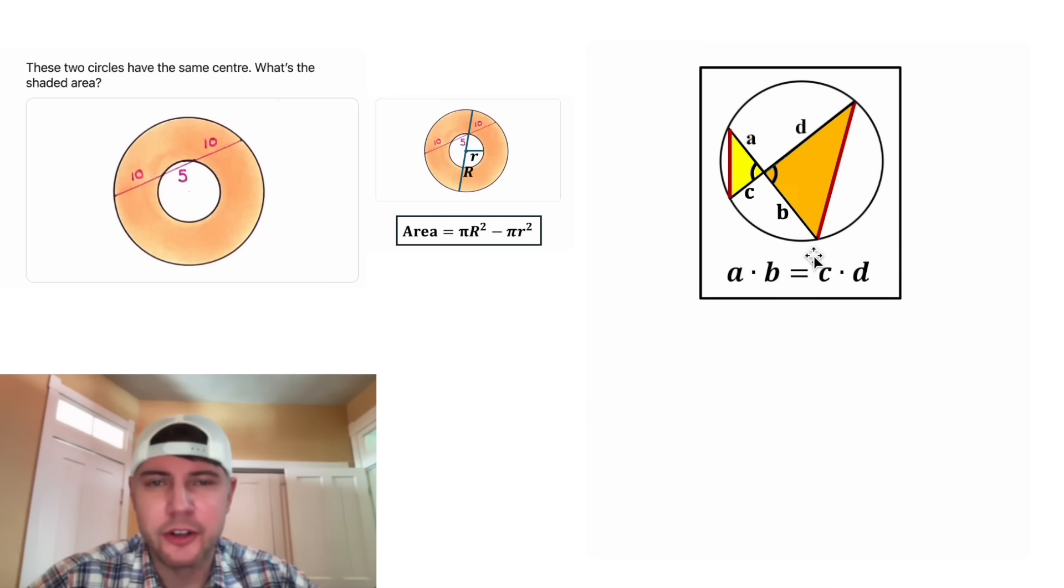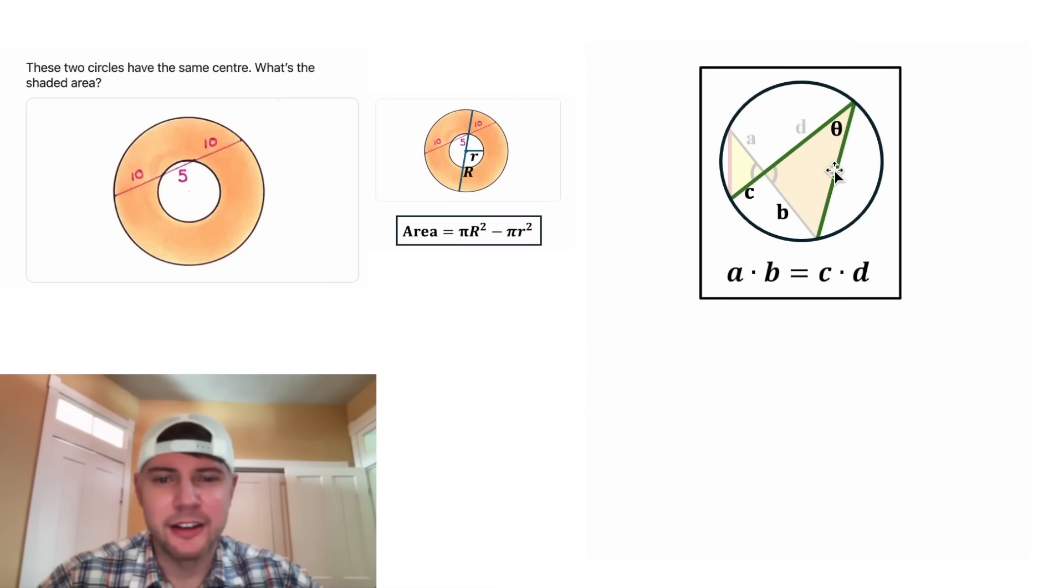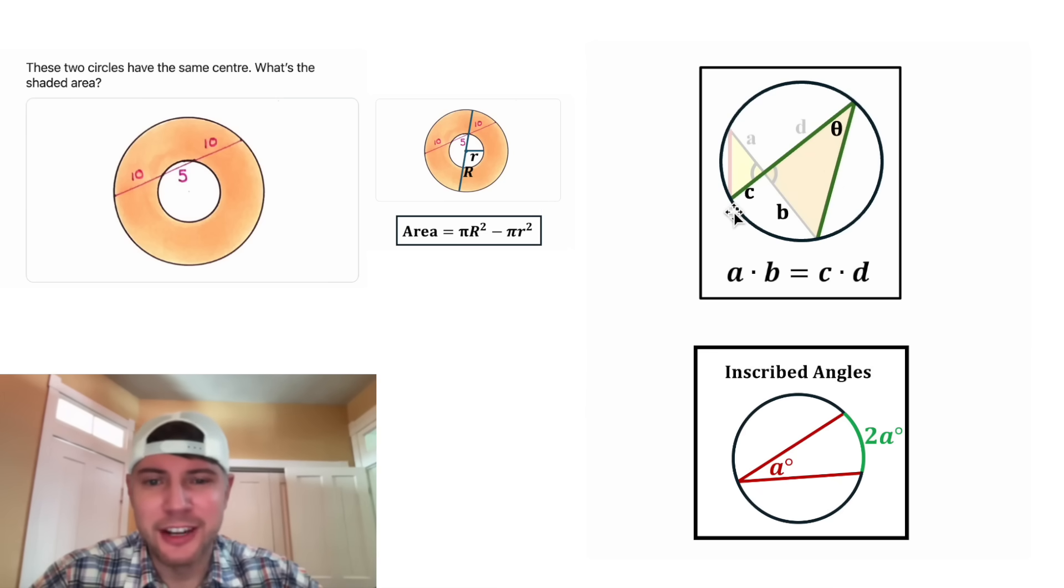Next, let's focus on this angle of the orange triangle. Let's isolate it here and label it θ. This is called an inscribed angle, and it's always true that an inscribed angle is always half of the arc that it subtends, so this arc is going to be 2θ.